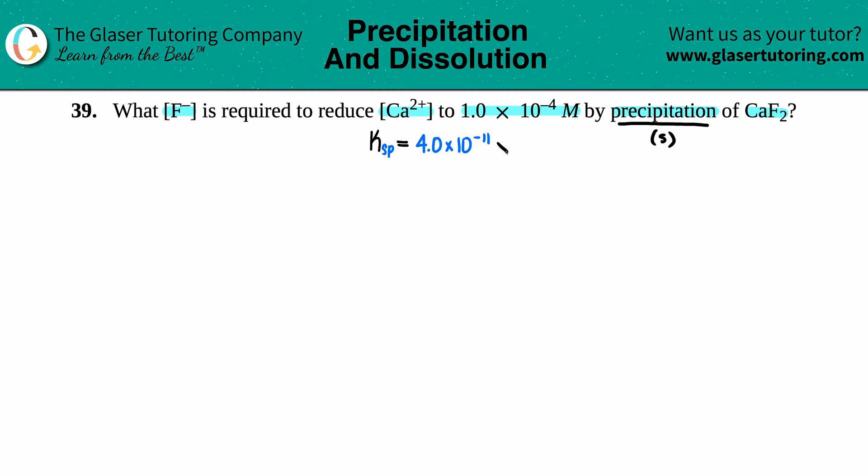Now if we're using a Ksp value, that means that this solution is at equilibrium and we're dealing with a saturated solution. Saturated solution is basically the very beginning of if you're making a precipitate in a solution. That's one thing we have to assume here: we can use the Ksp value because we are at a saturated solution, we're beginning the precipitation.